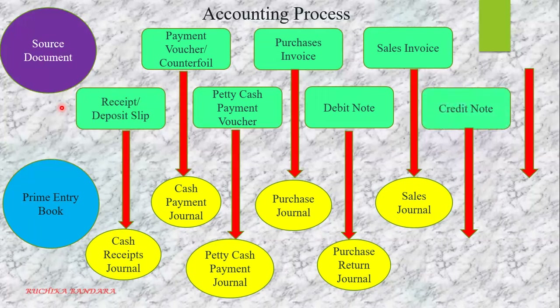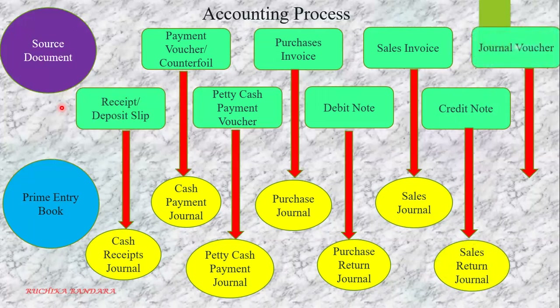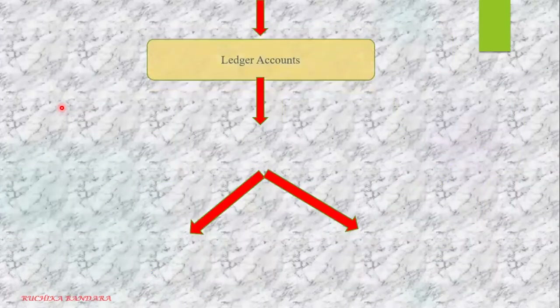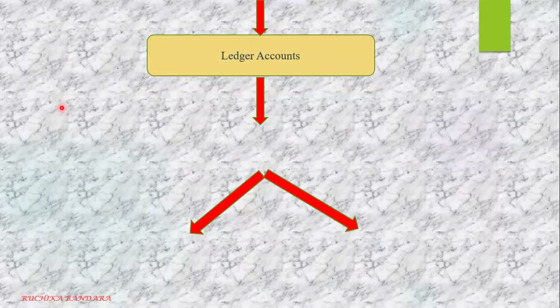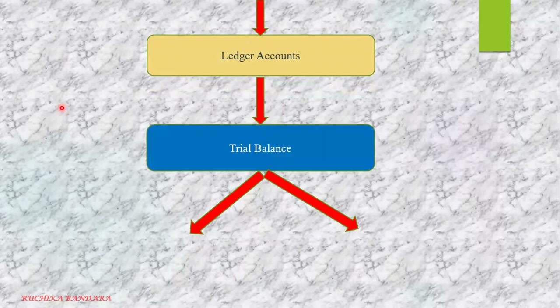Next is a credit note for the sales return journal. The last is the general journal, and its basic document is the journal voucher. After recording in the prime entry book, you have to put all these entries into ledger accounts. Then, by looking at the ledger accounts, we make the trial balance, and by looking at the trial balance, we make financial statements.